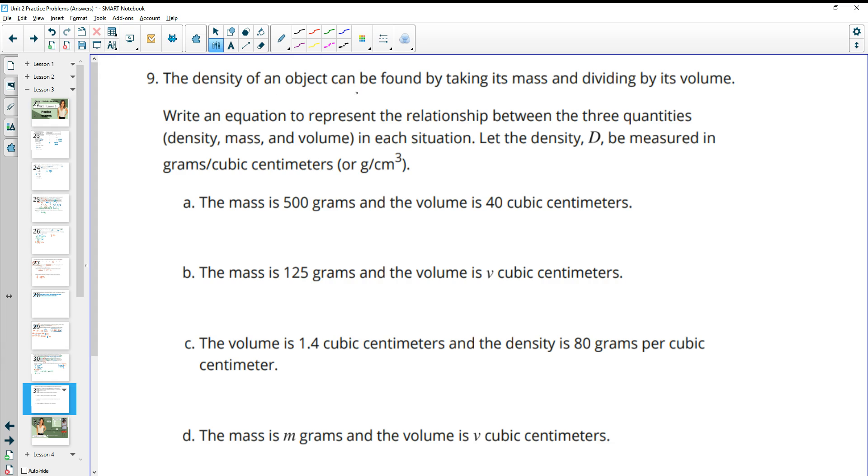Number nine, the density of an object can be found by taking its mass and dividing by its volume. So taking the mass and dividing by the volume, that's going to give us the density. So for part A, it says the mass is 500 grams and the volume is 40 centimeters. And we're supposed to be writing equations to represent these situations. So the mass, we take the mass and we divide it by the volume. So 500 divided by 40 would be our equation for that situation, or our expression. And then I'll say density equals that. You don't have to simplify it.